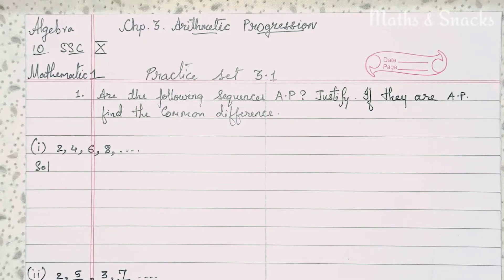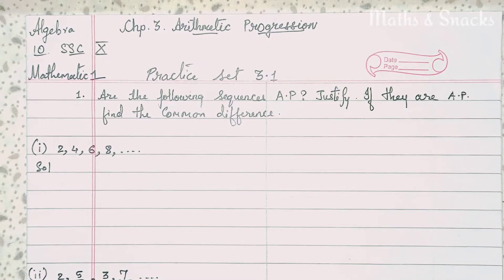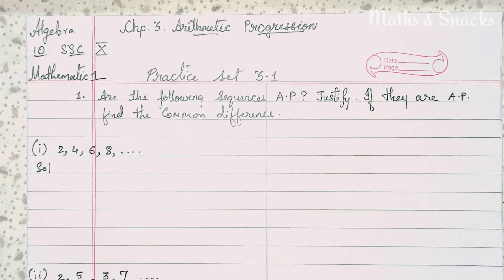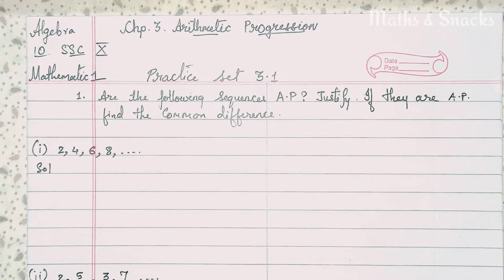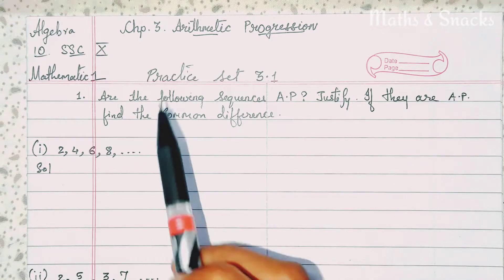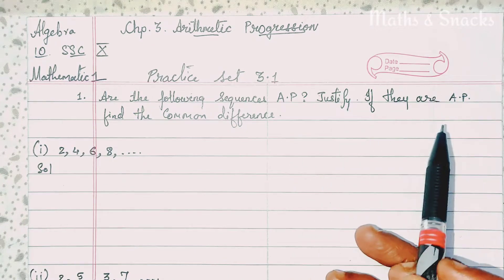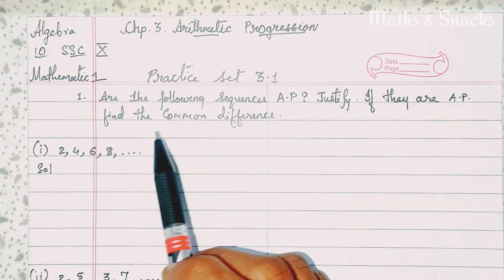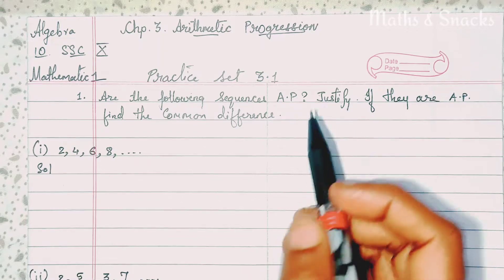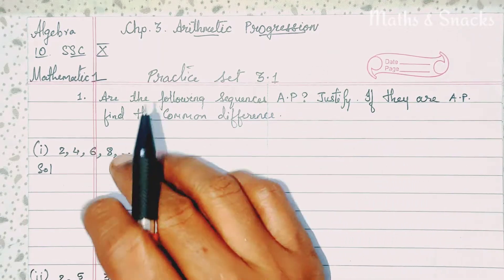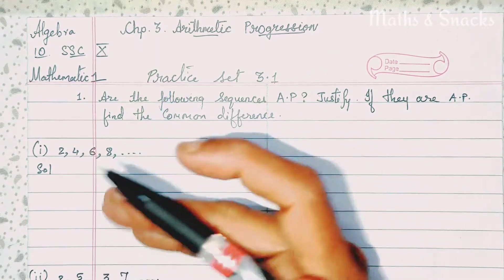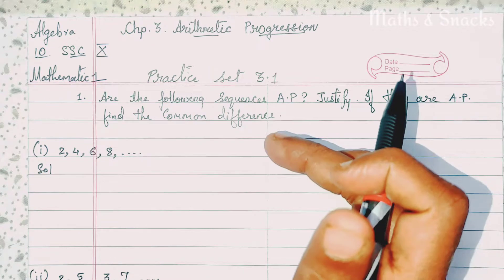Thank you for clicking this channel. Today we are going to start Chapter 3, Algebra Arithmetic Progression. So Practice 3.1. The heading is: are the following sequences AP? Justify — if they are AP, find the common difference. So here we are asking whether the given sequence is an AP. What is AP? What is a sequence?